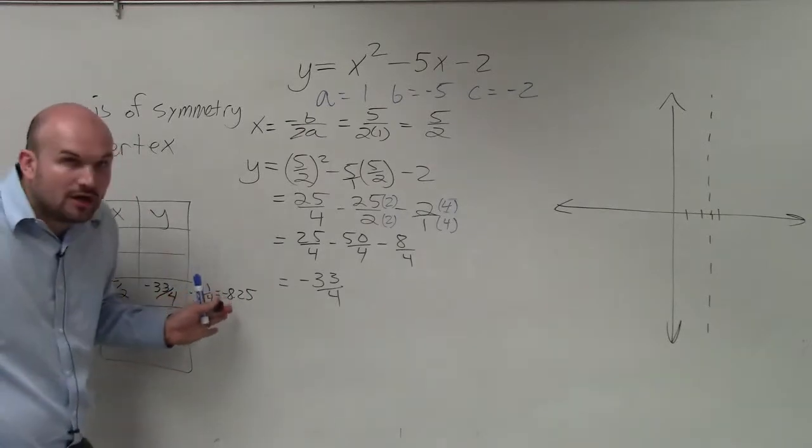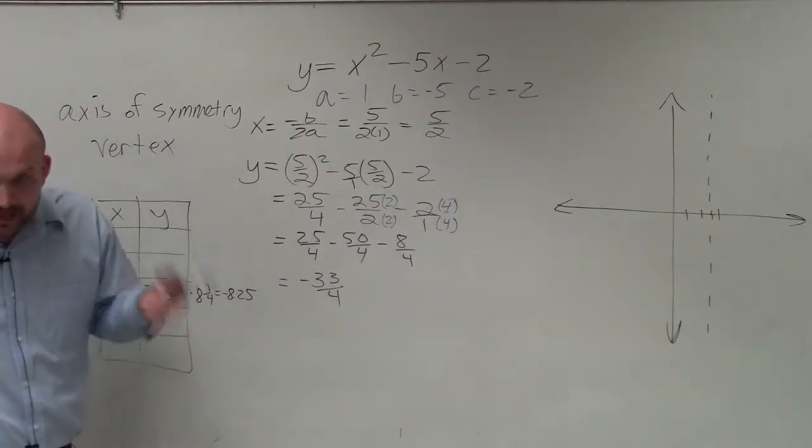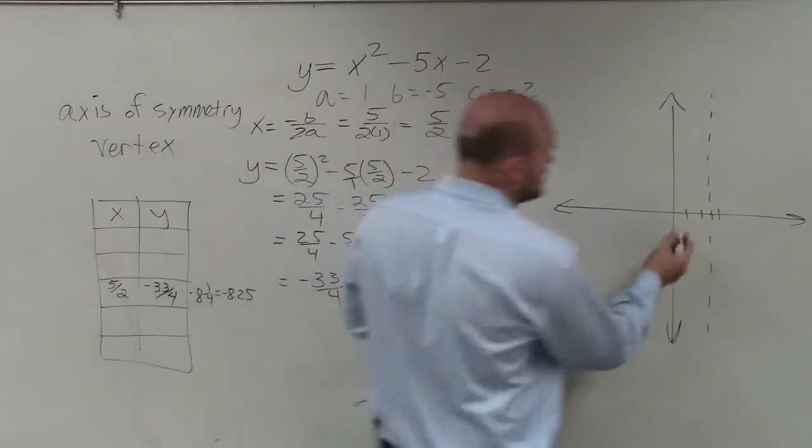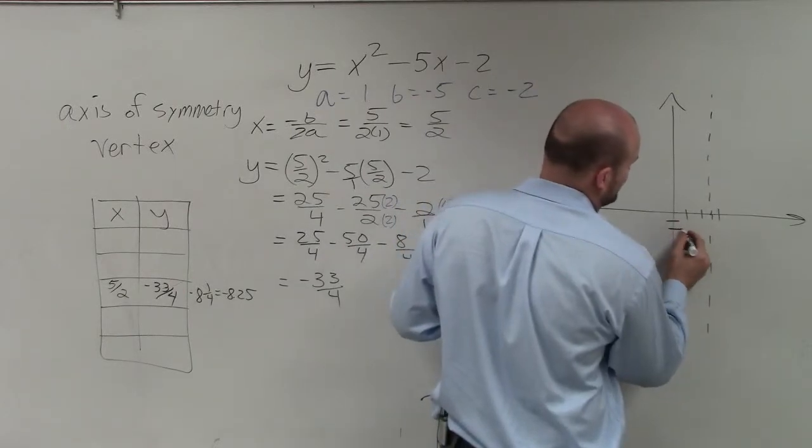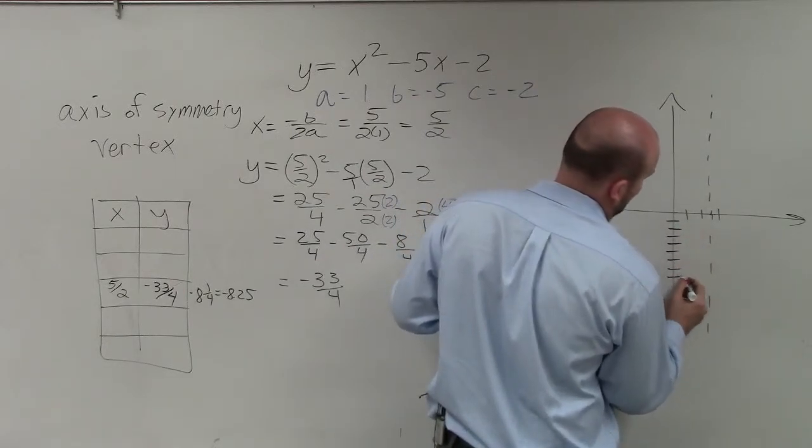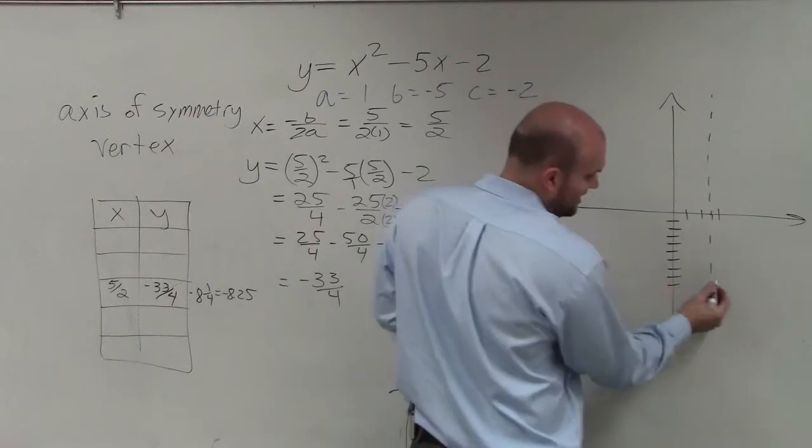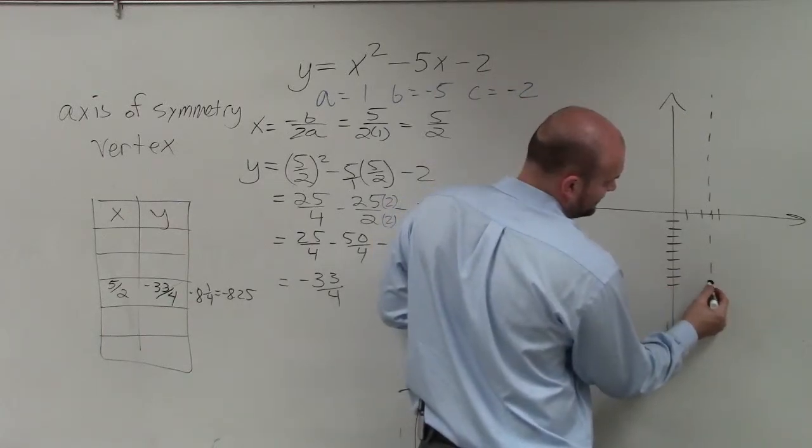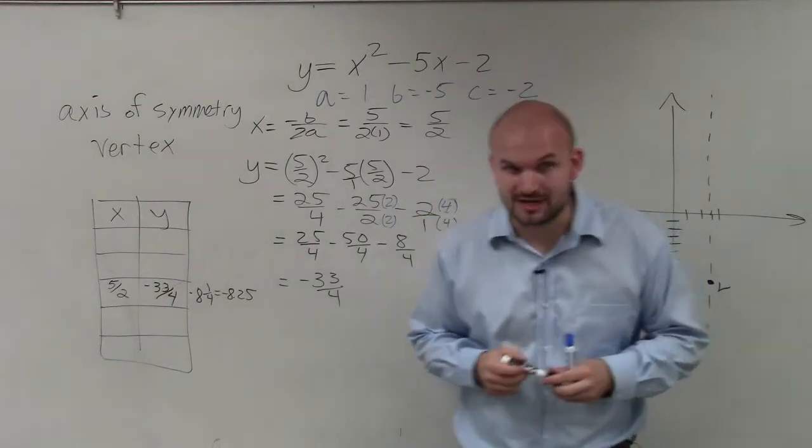Which I think we'd all agree that the decimal is the easiest one to visualize to graph. But at least we know that that's going to be at 1, 2, 3, 4, 5, 6, 7, 8, 9. So it's going to be between 8 and 9. It's just going to be like 1 fourth left.